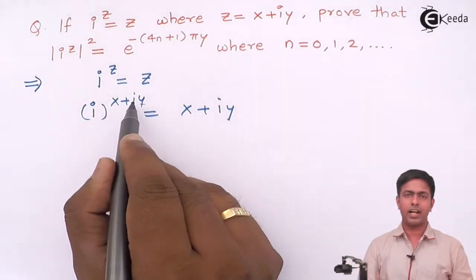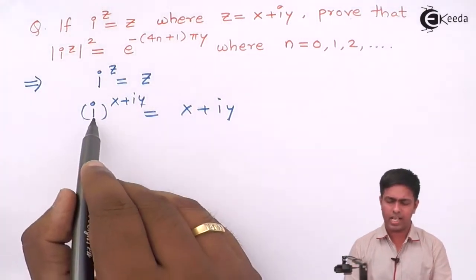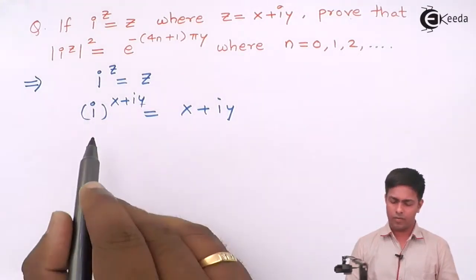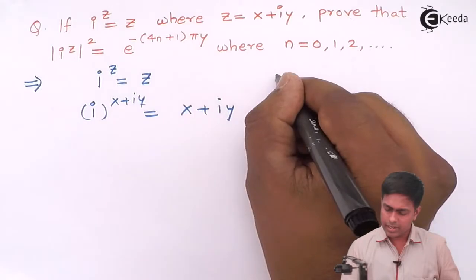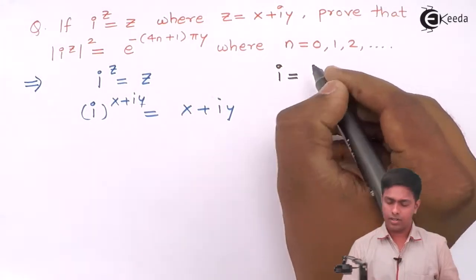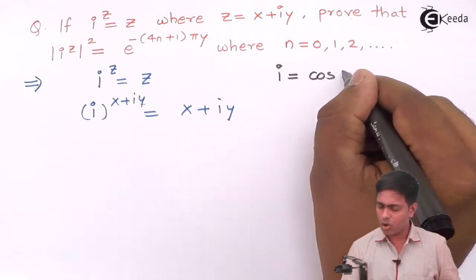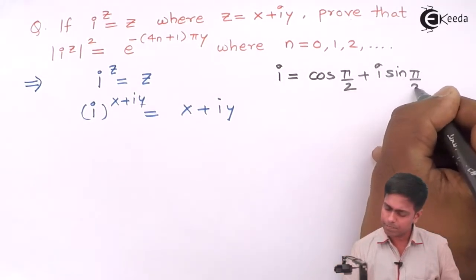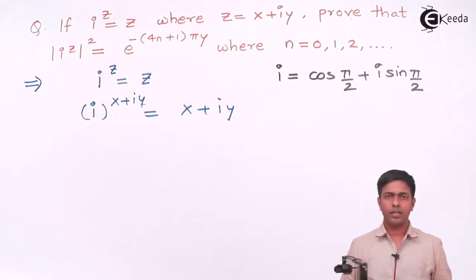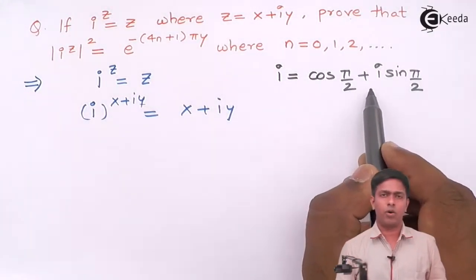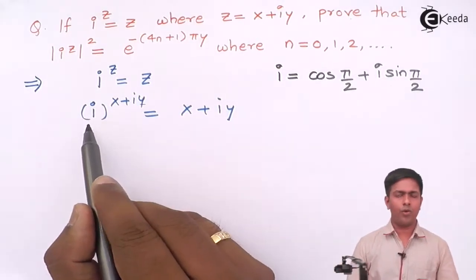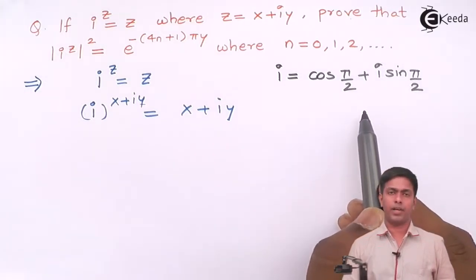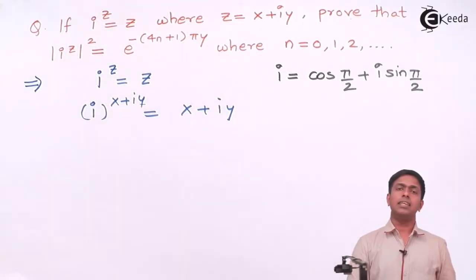The exponent is already in Cartesian form, so I just need to convert i into exponential form. From the last video, i equals cos(π/2) plus i·sin(π/2), which is the polar form. Converting to exponential form, i equals e raised to i·π/2. I'll substitute this here.